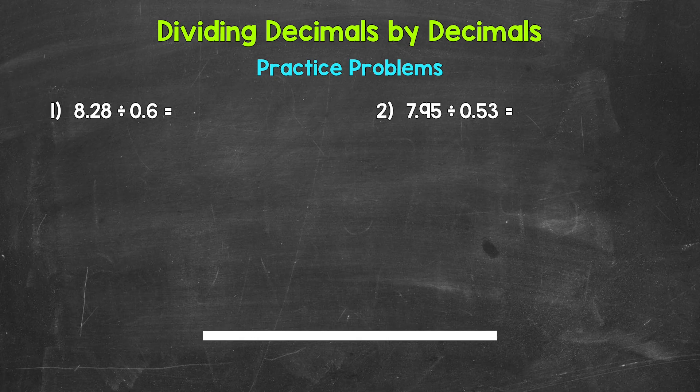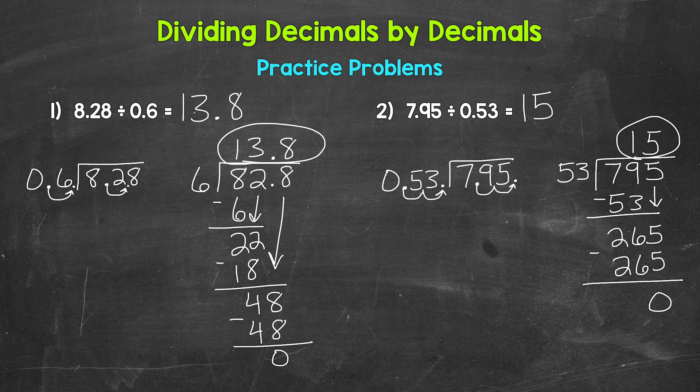Okay, so that was four minutes. Let's go over the answers. For number one, we have 8 and 28 hundredths divided by 6 tenths — that equals 13 and 8 tenths. For number two, 7 and 95 hundredths divided by 53 hundredths equals 15. So there you have it — that's how to divide decimals by decimals. I hope that helped.